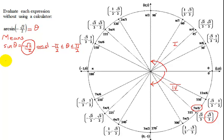And so at this point a lot of students say theta equals 7π over 4. But unfortunately that does not lie within the range that I'm allowed to have.